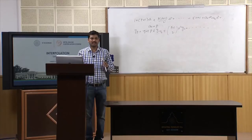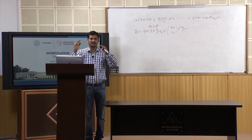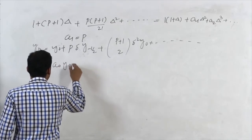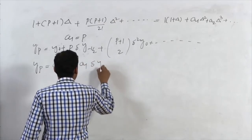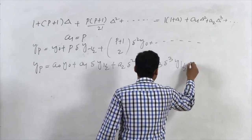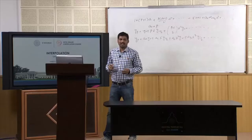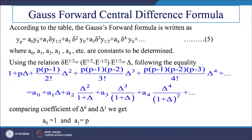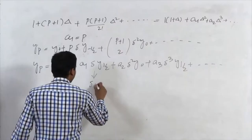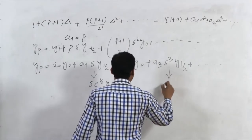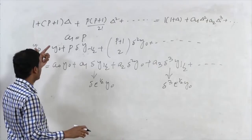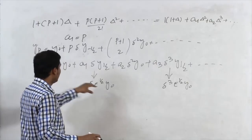For the Gauss forward central difference formula, the coefficients are chosen for forward marching steps. We write Yₚ = A₀·Y₀ + A₁·ΔY(½) + A₂·Δ²Y₀ + A₃·Δ³Y(½) + ..., where the odd-difference terms use Y(½) instead of Y(−½). The term Δ·E^(½)·Y₀ and Δ³·E^(½)·Y₀ are used, and both sides are expressed in terms of the forward difference operator Δ operated on Y₀.